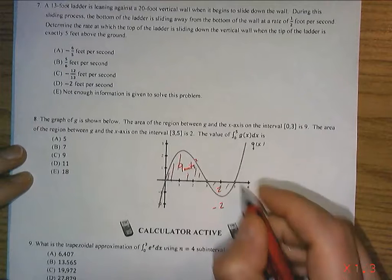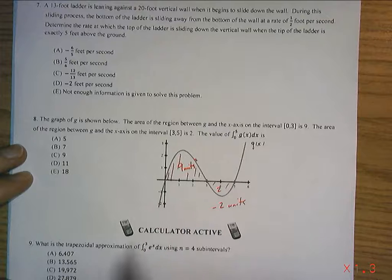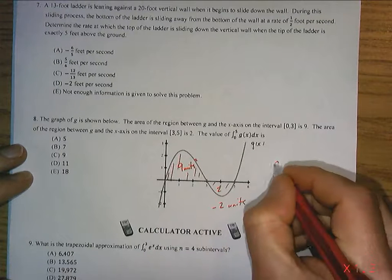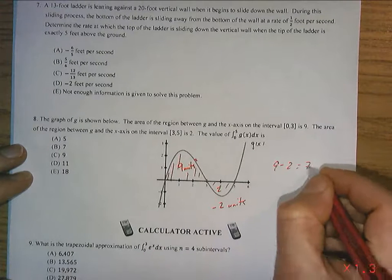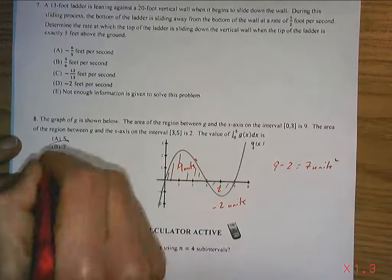This was 9 units squared. So when we add up the total area being shown here, we have to subtract this 2 from the 9. So 9 minus 2 is 7 units squared, which gives us an answer of B.